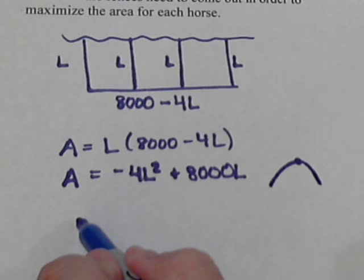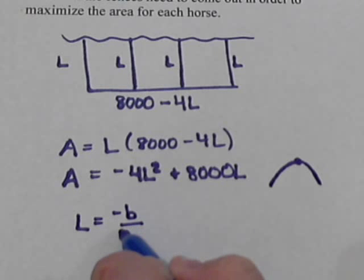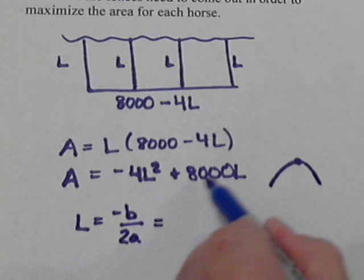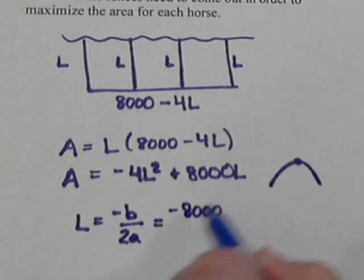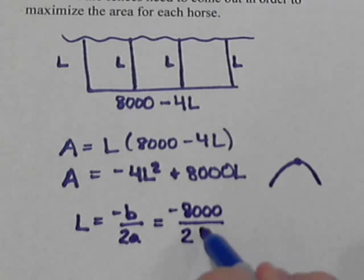So we use our formula to get the L. Negative B over 2A which would be negative 8,000 all over 2 times our A, negative 4.